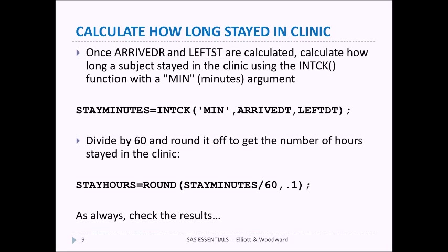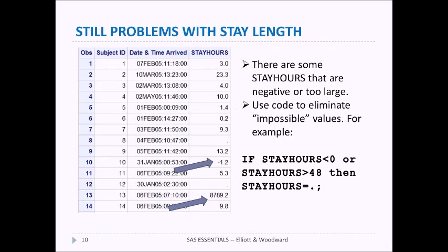We call that stay_minutes. If we divide that value by 60 and round it off, we get the number of hours stayed in the clinic. We always want to check our results, and when we run them we see that for the most part it looks okay. However, there are still some issues — we get a negative time for someone and a really large time for others.